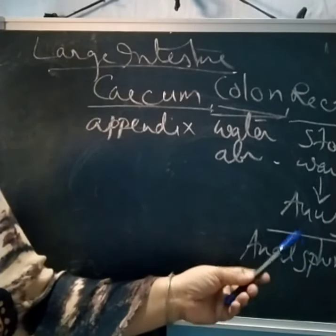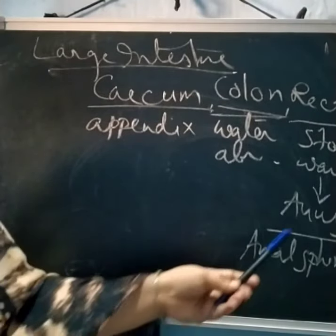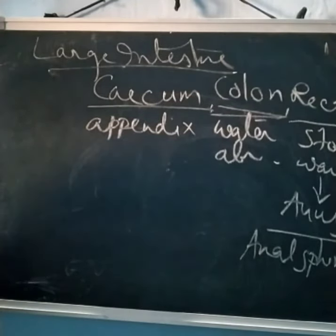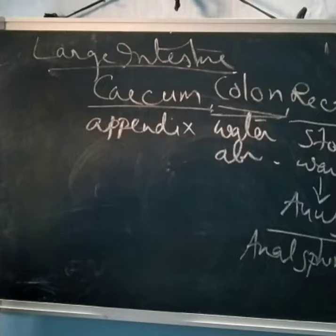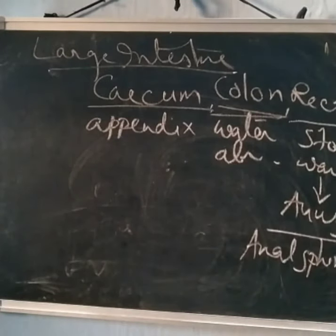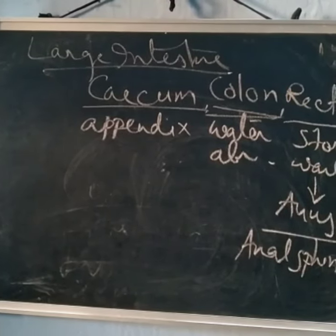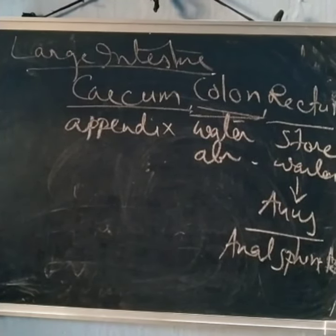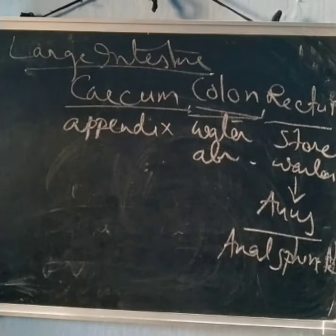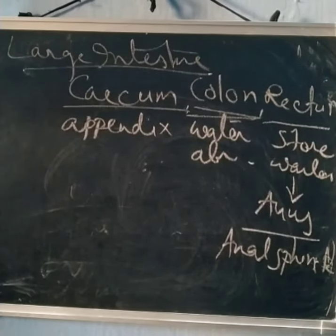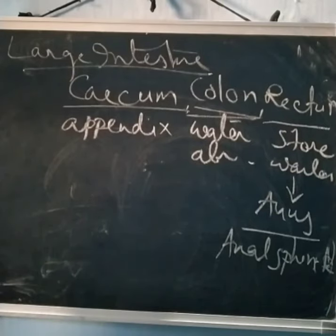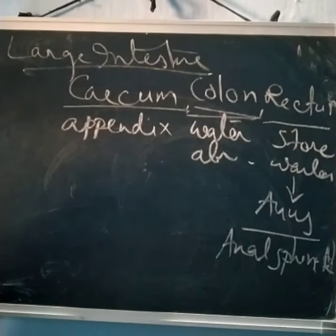The anus has an anal sphincter muscle, and all the fecal matter moves out through the anus. The anal sphincter controls this passage. Sphincter muscles help in the regulation of passage of food throughout the digestive system, from organ to organ. This completes the digestion process.